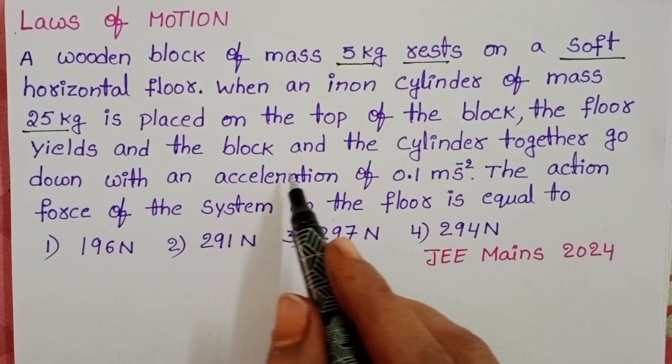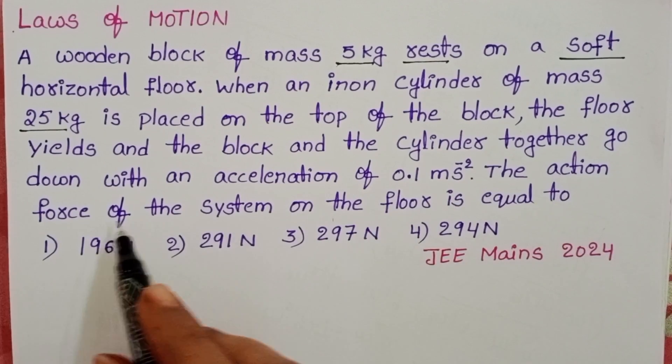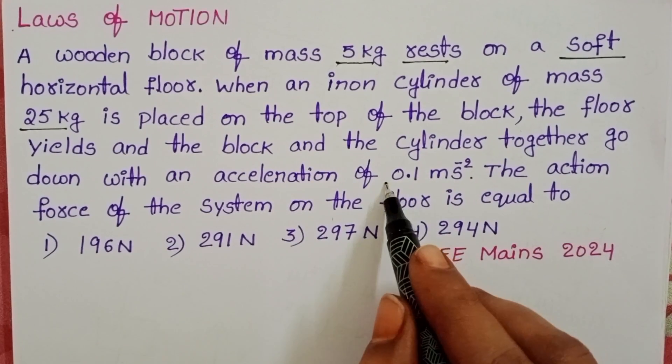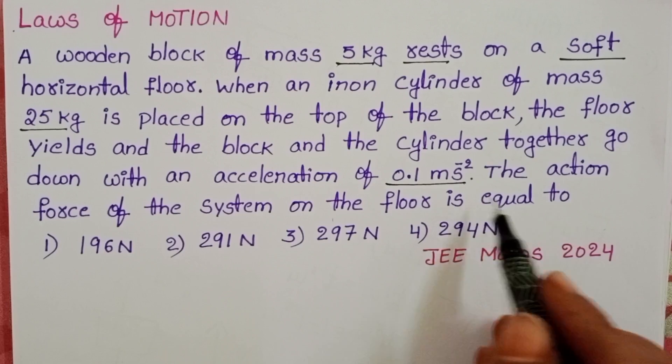The floor yields and the block and cylinder together go down with an acceleration of 0.1 m per second squared.